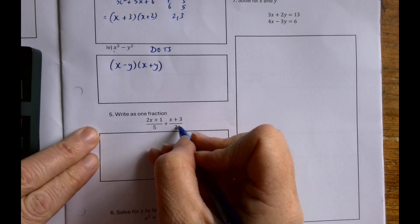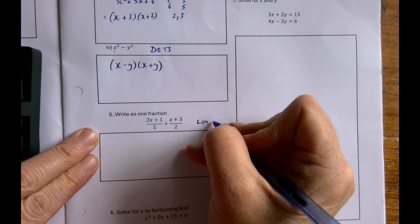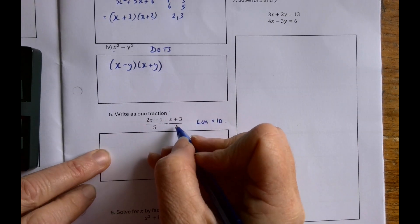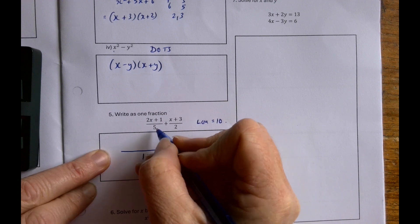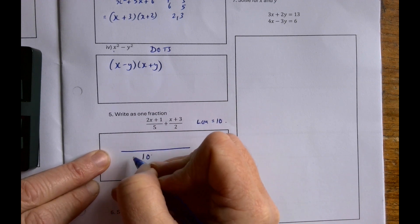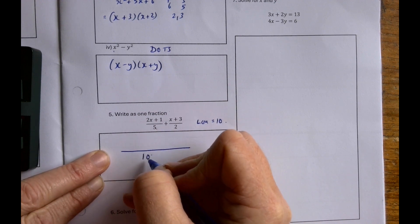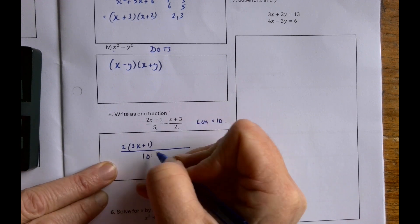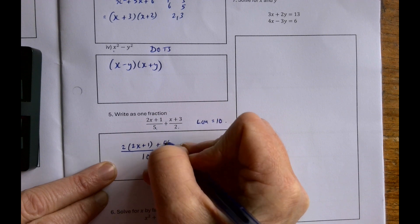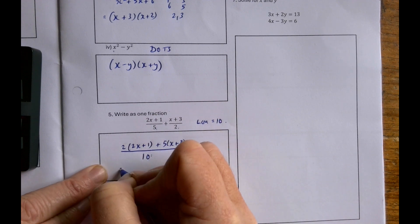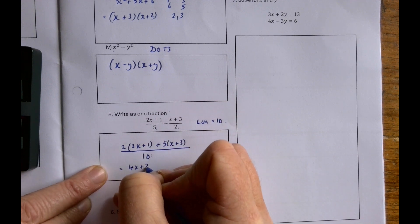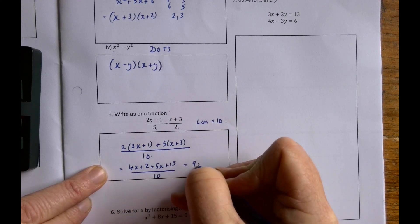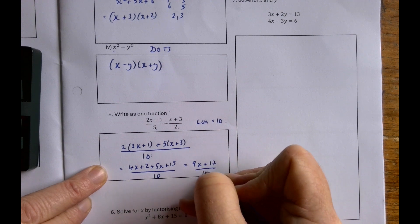Write as one fraction. The LCM or the lowest common denominator, whichever you like to call it, is 10. So I'm going to write them both over 10. So 5 goes into 10 twice, so I have to multiply 5 by 2 to get 10, so I multiply 2 by the bracket here. And to get from 2 to 10 I multiply by 5, so I multiply the top by 5 as well. So I'm going to have 4x plus 2 plus 5x plus 15, all over 10, which is 9x plus 17 all over 10.